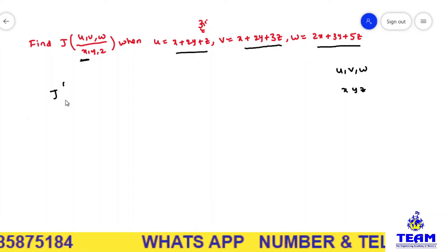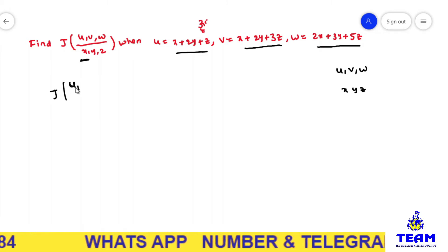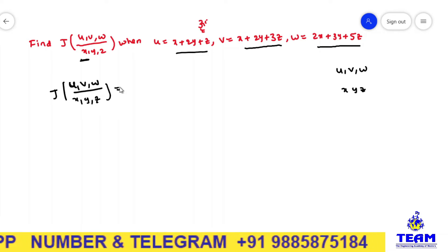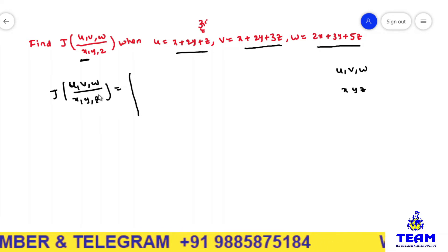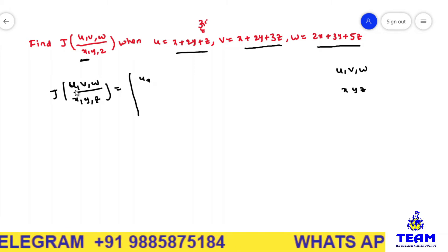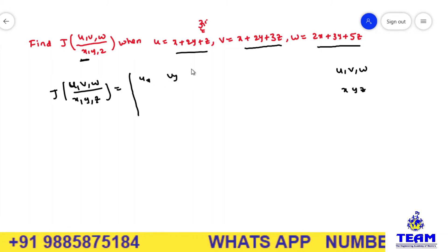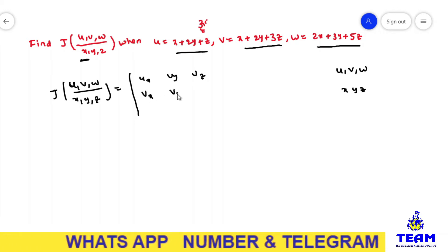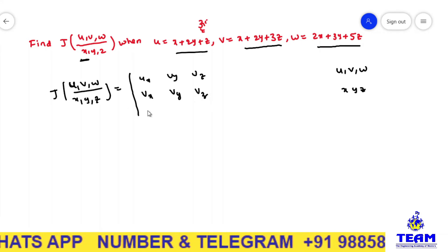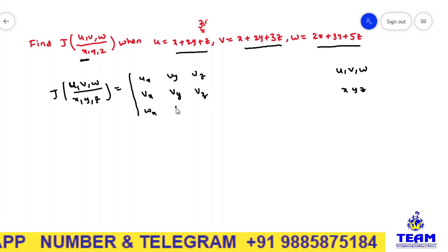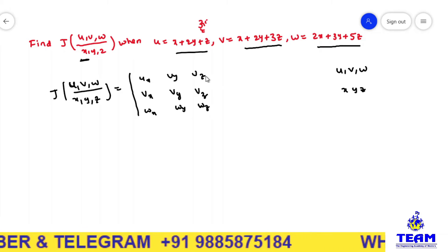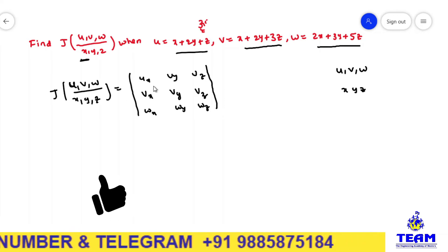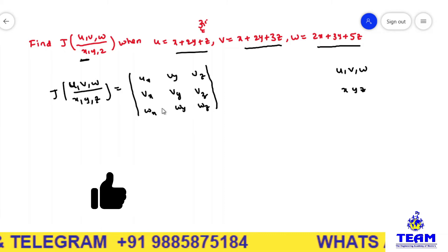Friends, the Jacobian of u, v, w with respect to x, y, z is the determinant of: ∂u/∂x, ∂u/∂y, ∂u/∂z in the first row; ∂v/∂x, ∂v/∂y, ∂v/∂z in the second row; and ∂w/∂x, ∂w/∂y, ∂w/∂z in the third row. Now we need to find out the partial derivatives of u, v, w with respect to x, y, z.